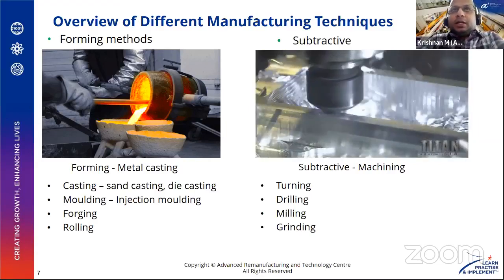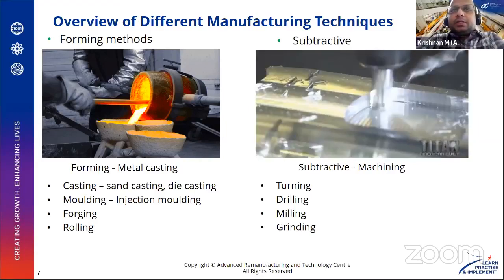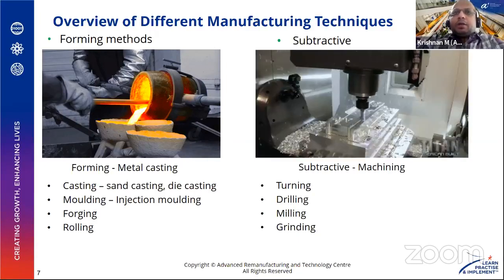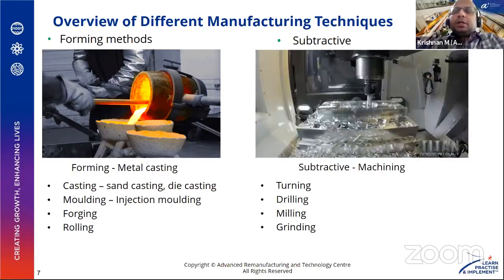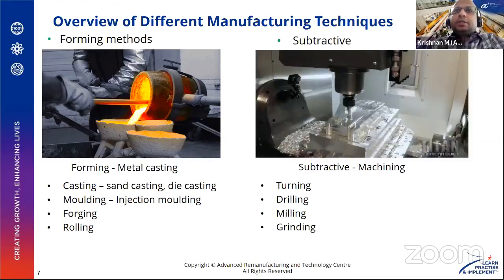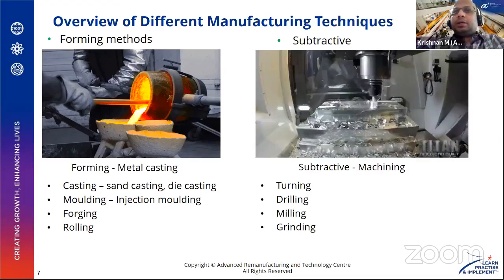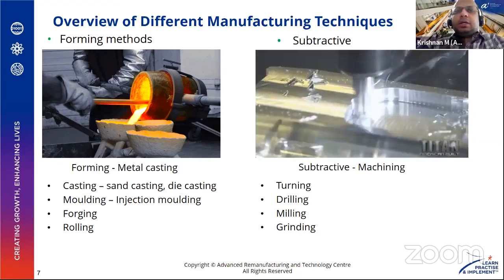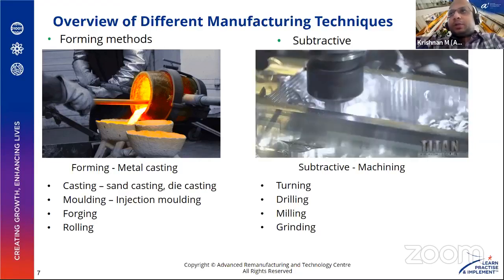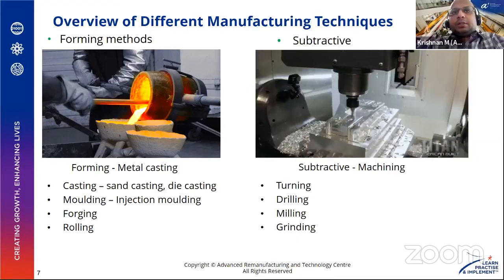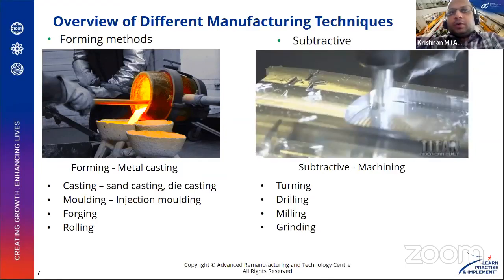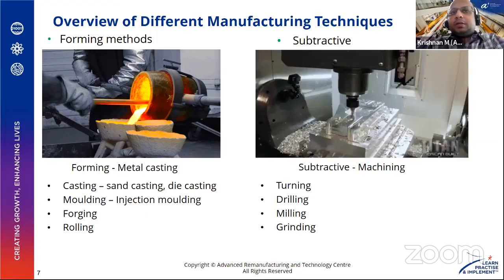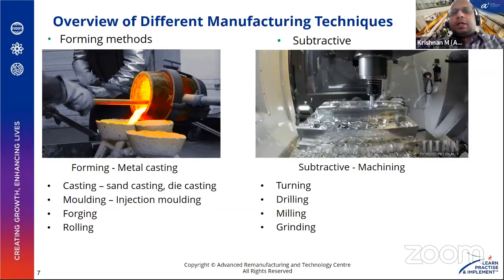The second category of manufacturing technique would be subtractive manufacturing. We have a block of raw material feedstock and we start to remove the excess material from this feedstock in order to form the end-usable component geometry. Some examples of subtractive manufacturing processes include turning, drilling, and grinding.